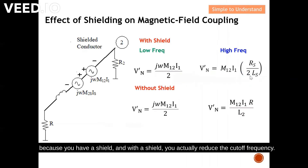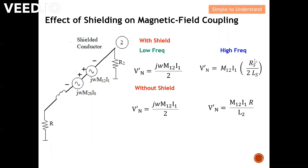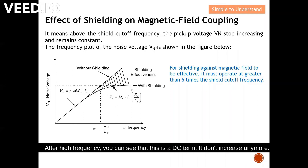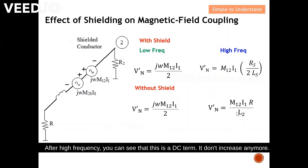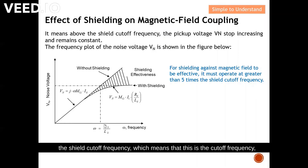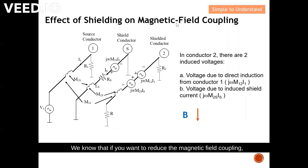With a shield, the cutoff frequency shifts to the left, which means above the shield cutoff frequency the pickup voltage stops increasing and remains constant — it becomes a DC-like term that no longer increases. For shielding against magnetic field to be effective, it must operate at least five times the shield cutoff frequency. You must operate at five times this frequency in order to have shielding effectiveness. To reduce magnetic field coupling, we need to reduce B and also reduce the area.